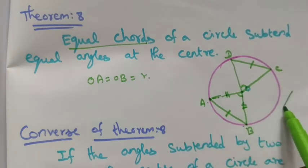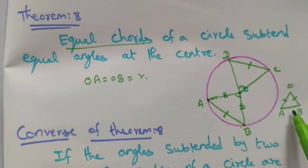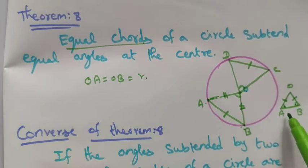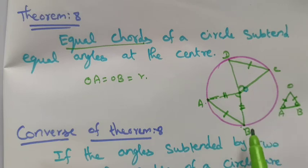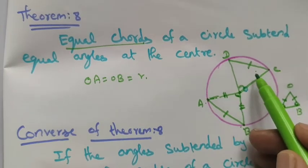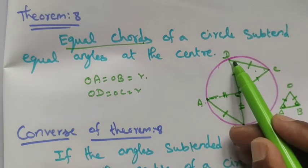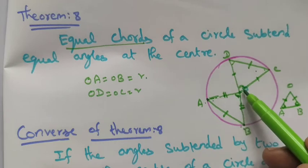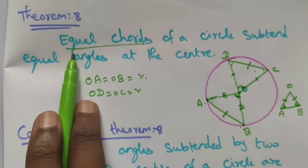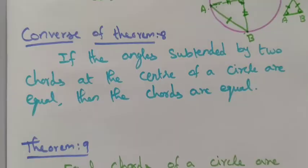By isosceles triangle conditions, the two base angles are equal. Since the angle sum in a triangle is 180 degrees, we get 180 minus those two equal angles. The radii OD and OC are also equal. By the same conditions and same angle reasoning, equal chords of a circle subtend equal angles at the center. The converse also holds.